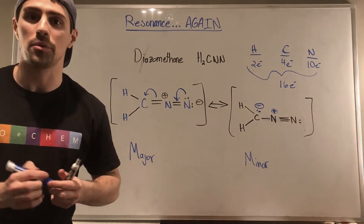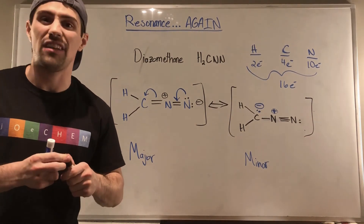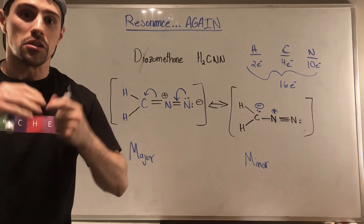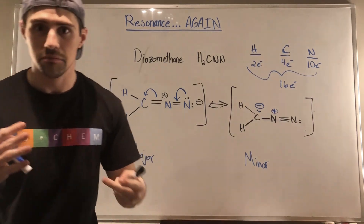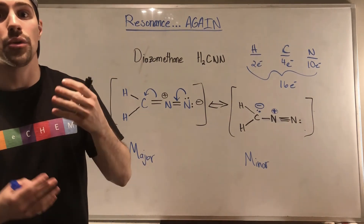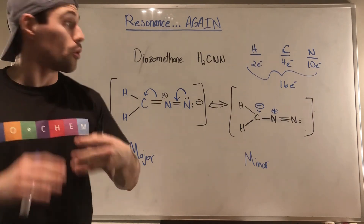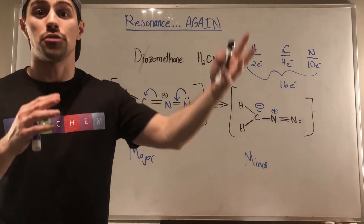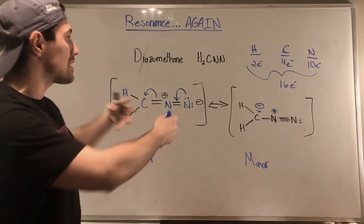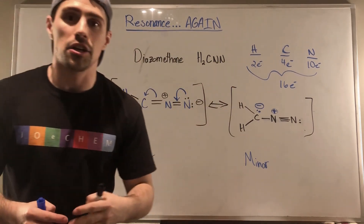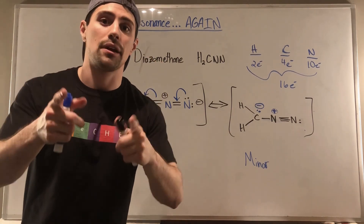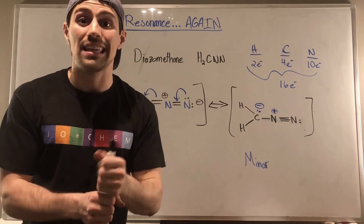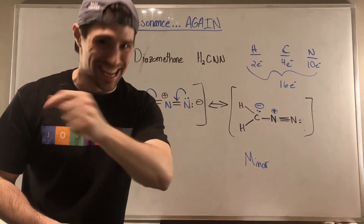At this point you're probably resonanced out, but if you have anything left in the tank, I have a worksheet with non-trivial resonance structures to draw — more than two — and you'll be asked to identify the major contributor to the overall hybrid. It practices exactly what you just went through, and you'll need to rely on those three guidelines. I would highly recommend doing that worksheet. Thank you for liking and hopefully subscribing, and I'll see you all in the next video.